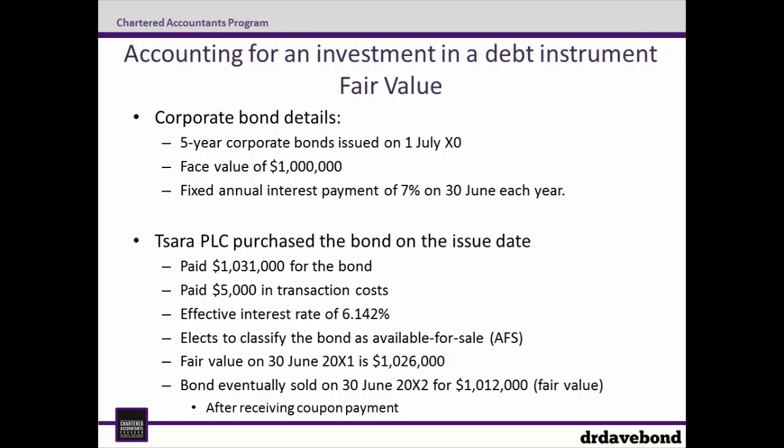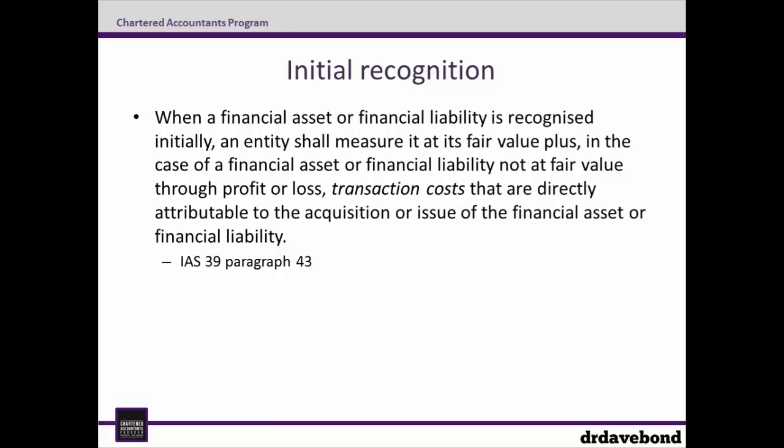This example will focus on SARA's accounting for the bond. The first step is initial recognition. According to IAS 39 paragraph 43, when a financial asset or financial liability is recognized initially, an entity shall measure it at its fair value plus, in the case of a financial asset or financial liability not at fair value through profit or loss, transaction costs that are directly attributable to the acquisition or issue of the financial asset or financial liability.